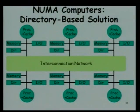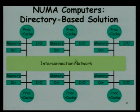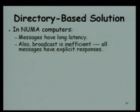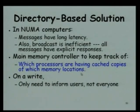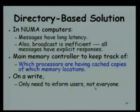We had discussed about a non-uniform memory access computer — how the nodes have their memory and IO, and they communicate on an interconnection network where messages have long latency. Implementing broadcast is very inefficient because these are mostly point-to-point messaging. In a directory-based solution, we have to keep track of all the processors who are using a page — the cached copies of specific memory locations — and on a write, we only need to inform exactly those who are using it, not broadcast it.